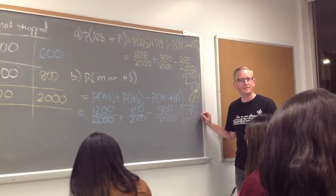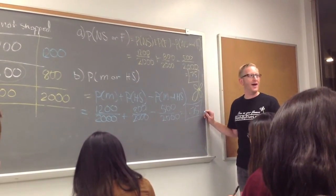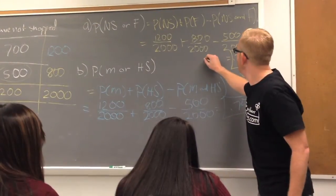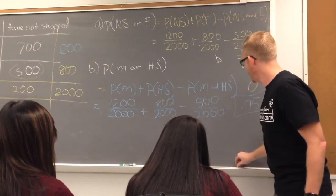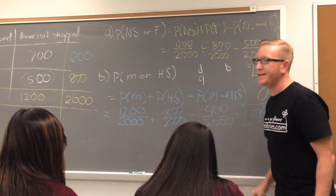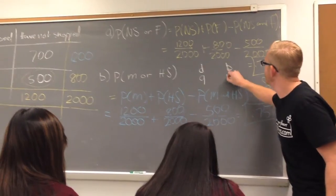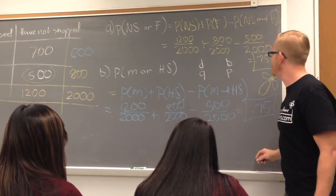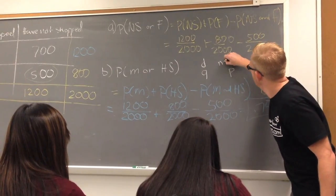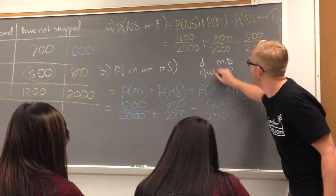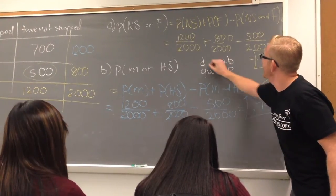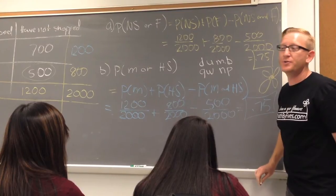Have I told you guys why I can't spell? I can't spell. Because B's — they look like D's. And D's — they look like Q's. And Q's — they look like P's. And M's — they look like W's. And N's — they look like U's. I just think the whole thing is a mess.